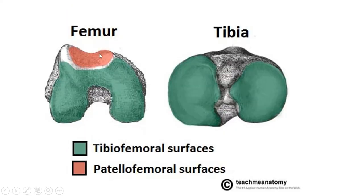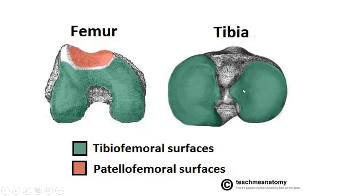Here you can see the femur and tibia — inferior view of the femur articular surface and top view of the tibia articular surface. The femur inferior end is convex whereas the tibial articular surface is flat. Here we have the intercondylar area between the two condyles. It is a bicondylar joint because the medial condyle of the femur articulates with the medial condyle of the tibia, and the lateral condyle of the femur articulates with the lateral condyle of the tibia.